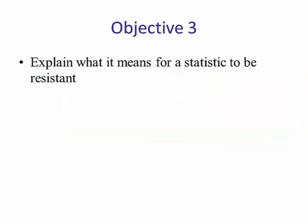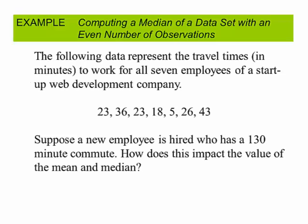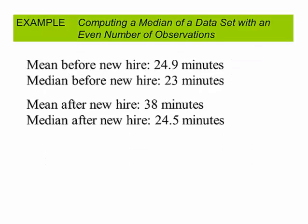Lesson objective number three: explain what it means for a statistic to be resistant. The following data represents travel times in minutes to work for 7 employees: 23, 36, 23, 18, 5, 26, and 43 minutes. Now suppose a new employee is hired with a 130-minute commute. The mean before the new hire was 24.9 minutes and the median was 23 minutes. After the new hire, the mean went to 38 minutes and the median to 24.5. Both increased, but the mean shifted dramatically — that large value had a big effect on it.